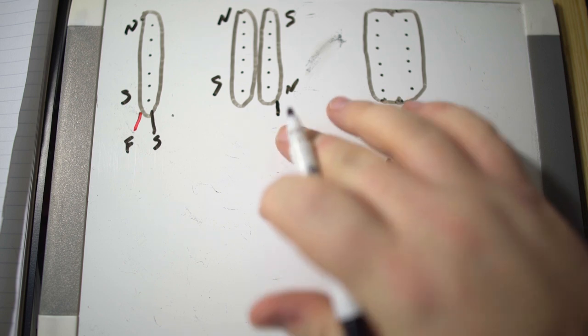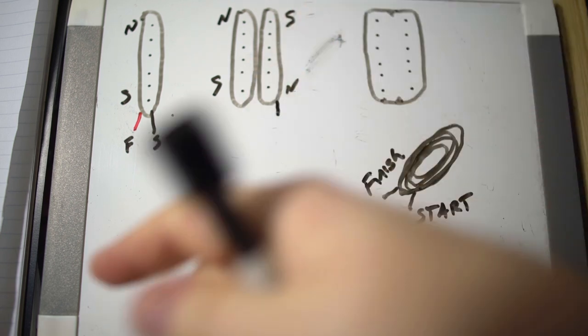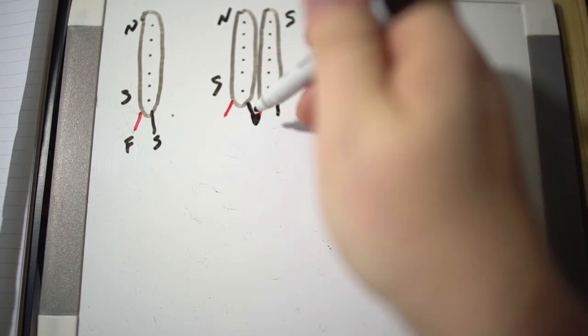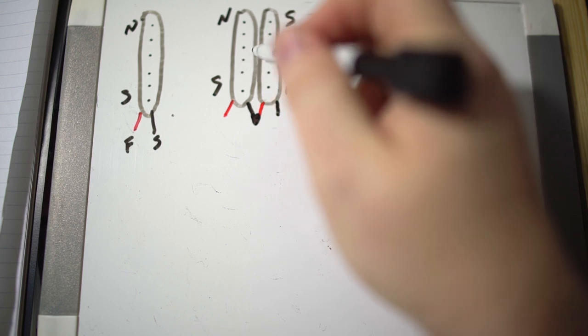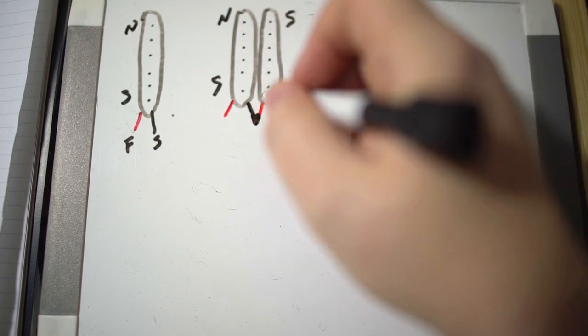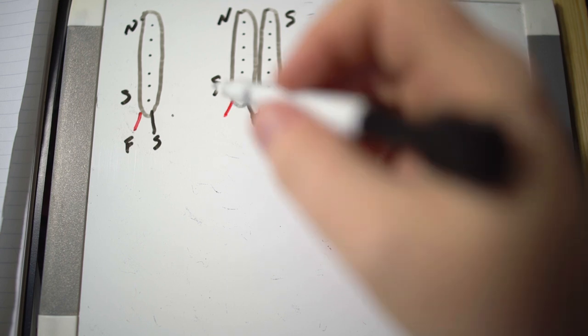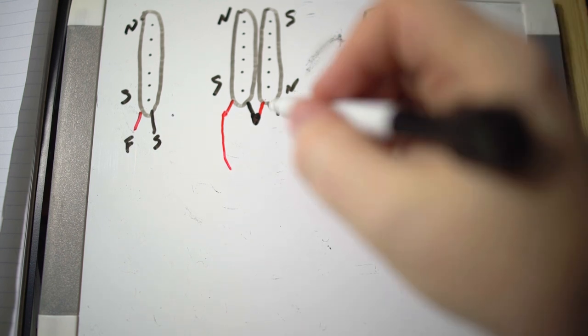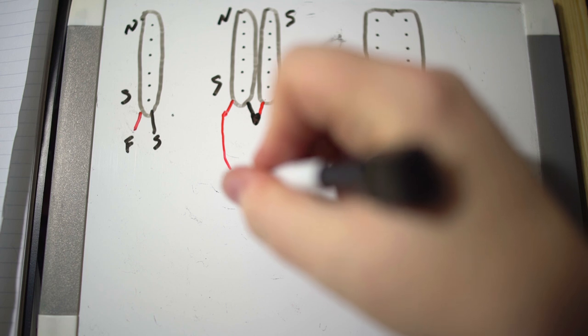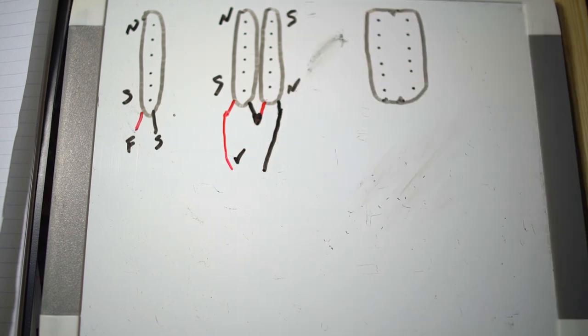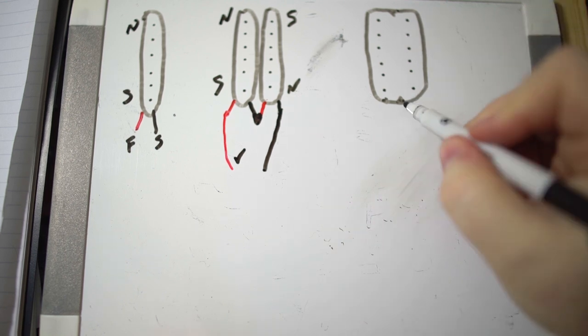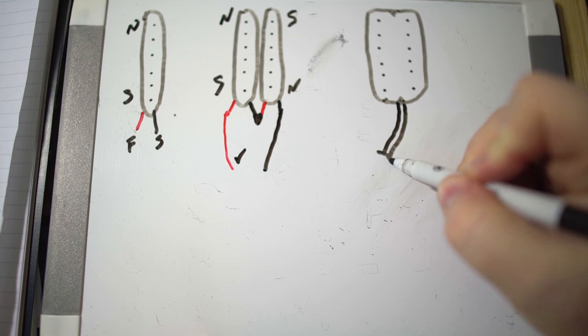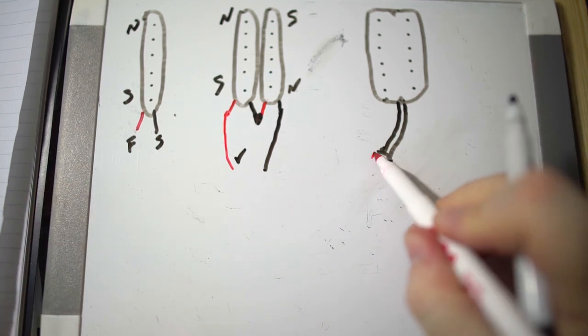Your wires would come in and your finish is going to be your hot lead. If you have a two-lead humbucker and you have two coils, your finish of one will be connected to the start of the next coil. Then all you're going to have are two leads that come off. One of them will go to ground, one of them will be your hot lead out. So what's different when we get a humbucker that has four leads coming off of it?